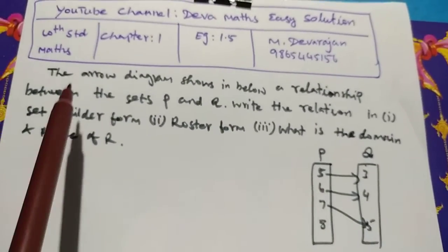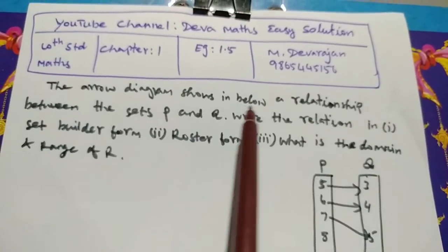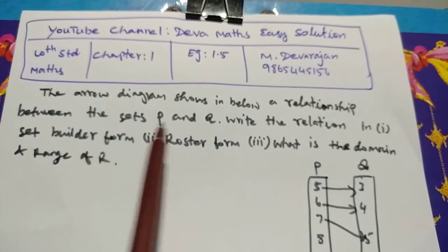The arrow diagram shown below demonstrates a relationship between the sets P and Q.